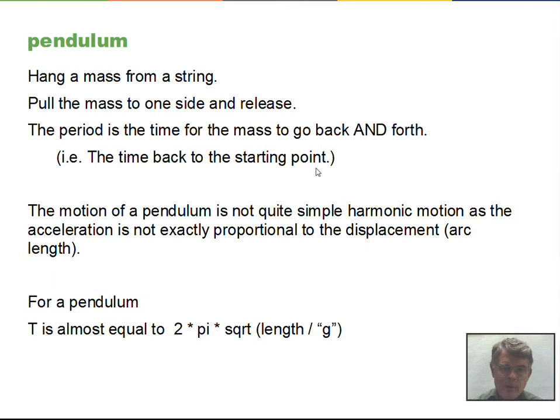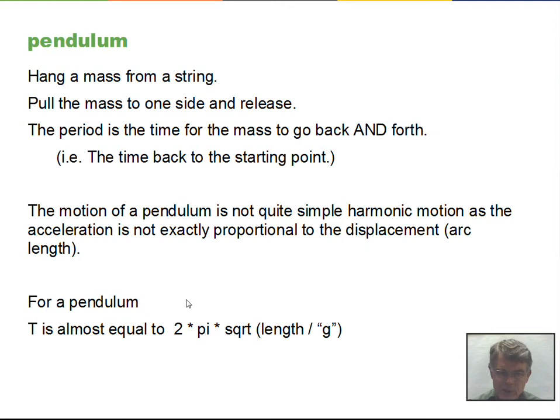For small angles, the pendulum obeys a period equation: T = 2π times the square root of the length of the pendulum in meters divided by the local acceleration due to gravity, g — for most people 9.8 m/s². Standard metric units are required to calculate the period.